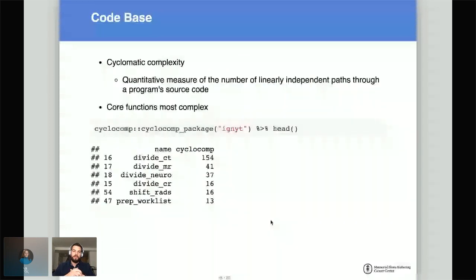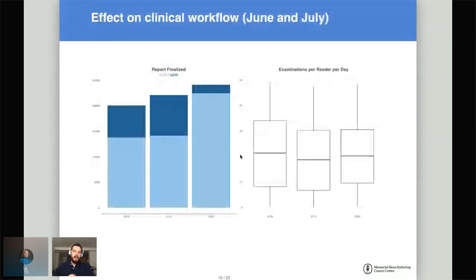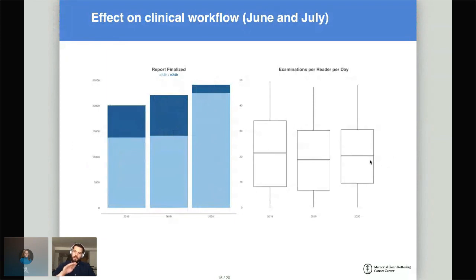Looking at the complexity of the different code: some of you may be familiar with cyclomatic complexity — a measure of how complex a function is. The divide functions, the core functions with the optimization algorithms, are among the most complex. Looking at the actual effect on our clinical workflow: the number of exams has steadily increased from 2018 to 2019 and into 2020, following a prior trend. What especially increased was the number of exams read slowly — more than a day old. In 2020, we've managed to read exams a lot more efficiently, while keeping the number of exams read per reader stable. We didn't force people to read more — it was just distributed more efficiently.